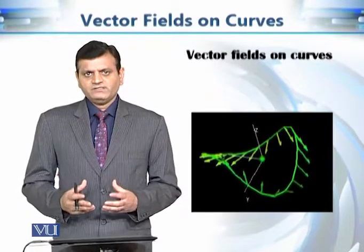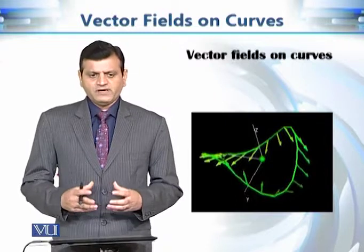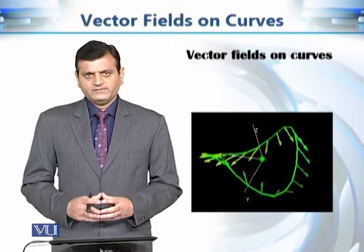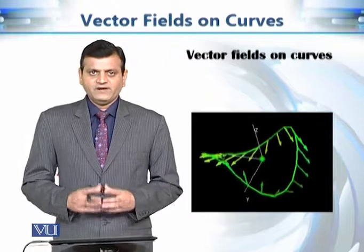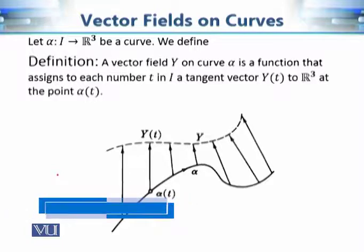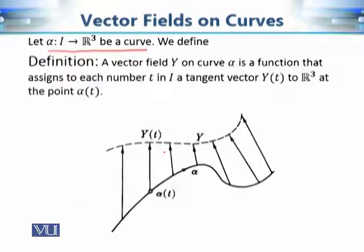After defining curves and vector fields on R3, we are now ready to prepare our tools to discuss the geometry of curves in R3. Our first tool is vector fields on curves in R3. So far we have defined what a vector field on R3 is, which gives us a vector at each and every point on R3. Now if we restrict that vector field to any given curve, we say that it is a vector field on that curve.